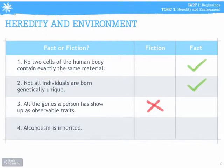And number four: alcoholism is inherited. This is also not true. You could have a predisposition, but it is not inherited.